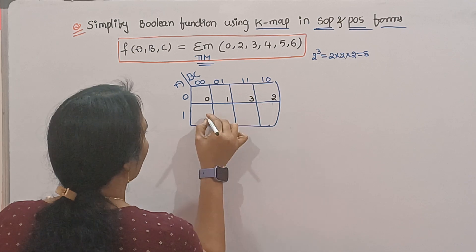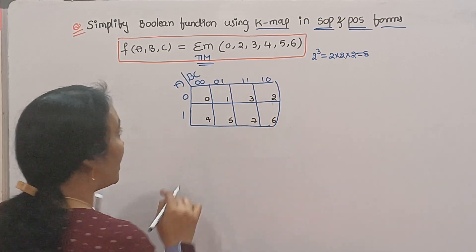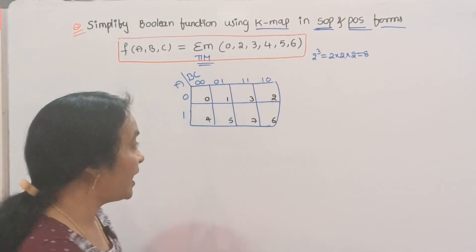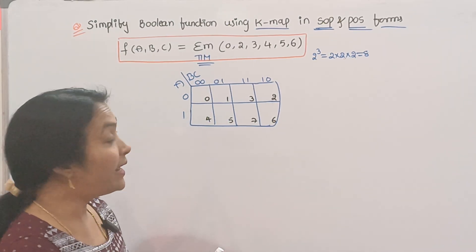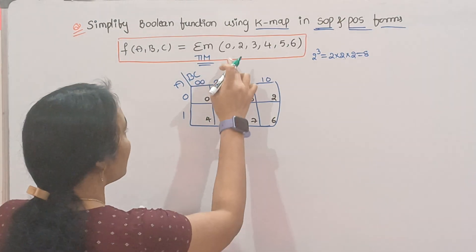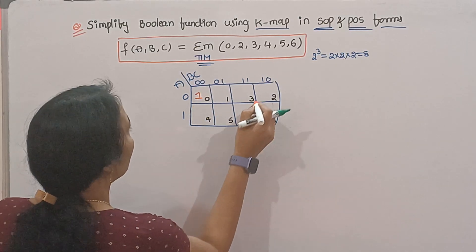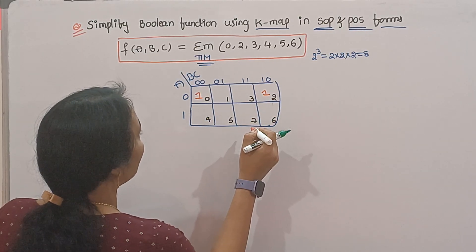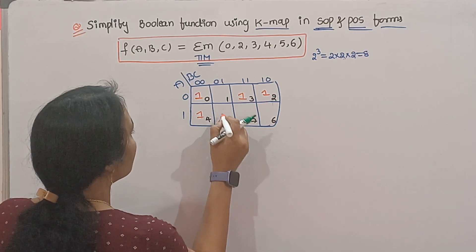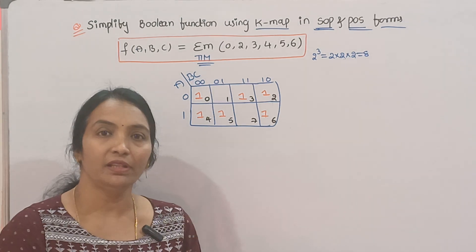Here it is 0, 1, 2, 3, 4, 5, 6, 7. Now, what do we do first? We do SOP. SOP inserts ones — in the min terms, we insert one in the places 1, 2, 3, 4, 5, 6. Once we do insert one, then we do SOP grouping also.